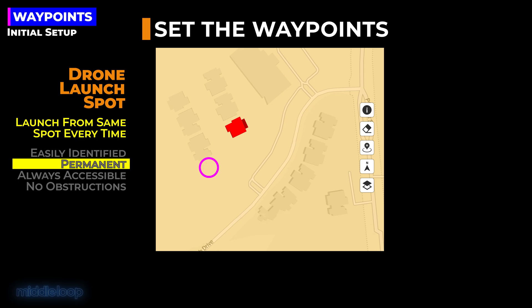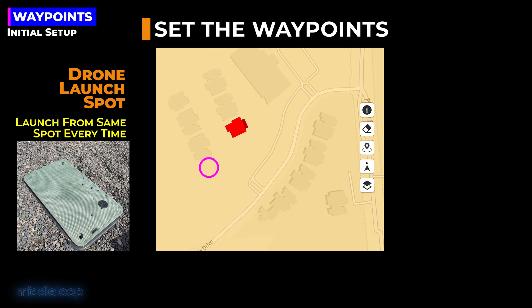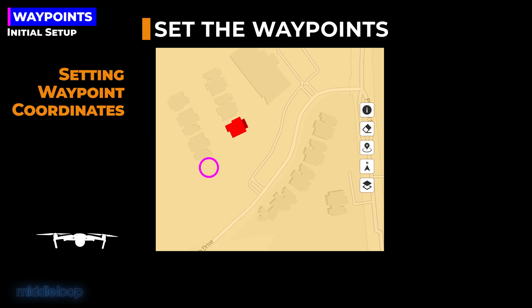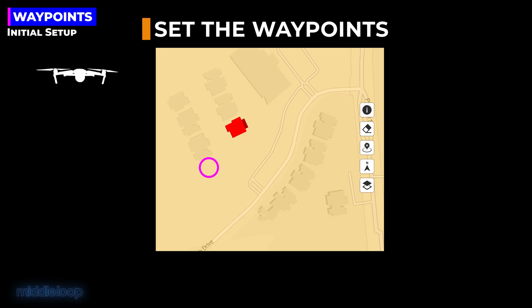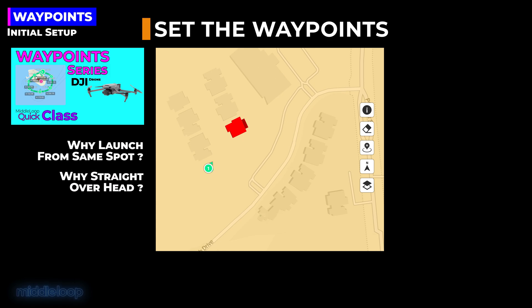The launch spot needed to be permanent — meaning it would always be there and wouldn't move — always accessible, and with no obstructions overhead like trees or wires. For this mission, we chose some sort of plastic utility cover, probably for fiber. For the first waypoint, we started up the drone and waited a couple of seconds for the home point to be established. Then we launched it and sent it straight up overhead to the height we identified earlier — about 100 feet — and this is where we set our first waypoint. We explained in our waypoint series why we always launch from the same spot and place the first waypoint directly over the launch spot.